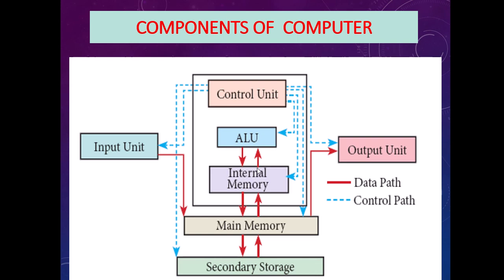For example, when I give 2 plus 3: the input unit reads 2 plus 3 and stores it in main memory. The control unit instructs main memory to send the data to internal memory, where 2 plus 3 is stored. Since there is an addition operation, the ALU performs it and the answer 5 is sent back to internal memory, then back to main memory. The control unit instructs main memory to send the result to the output unit, so 5 is transferred and the output unit displays the answer on the output device.